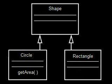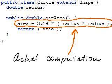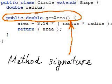Actual computation of the area of circle differs from the area of a rectangle object. At the same time, method signature to compute the area remains the same for all shapes. The getArea method has no input parameters and returns a double number as a result of computation.